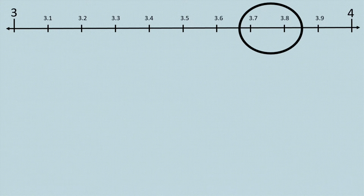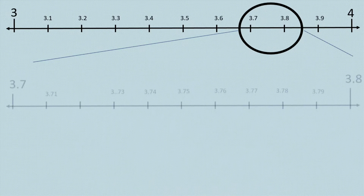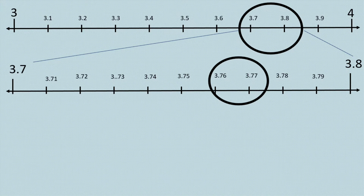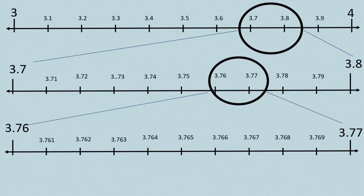Repeating the same process by dividing the number line into 10 subdivisions between 3.7 and 3.8, we focus the given number between 3.76 and 3.77. Finally, dividing the number line into 10 subdivisions again, we visualize the given number 3.765 between 3.76 and 3.77.